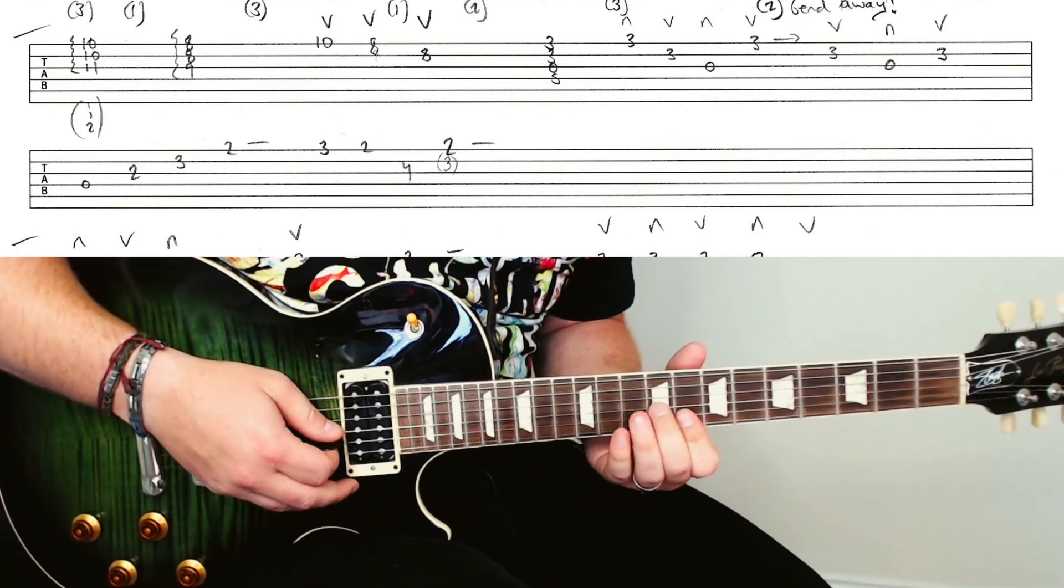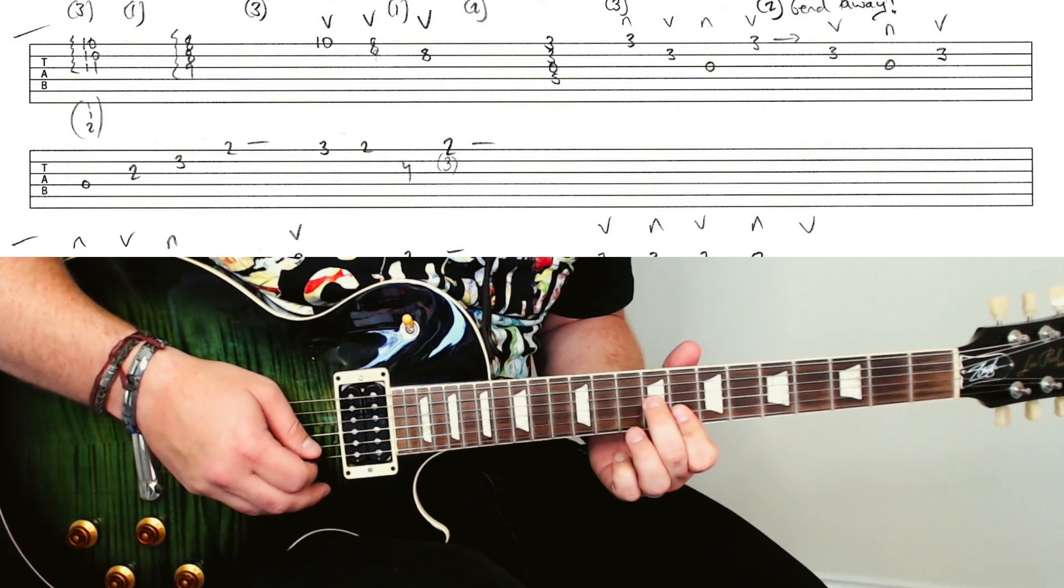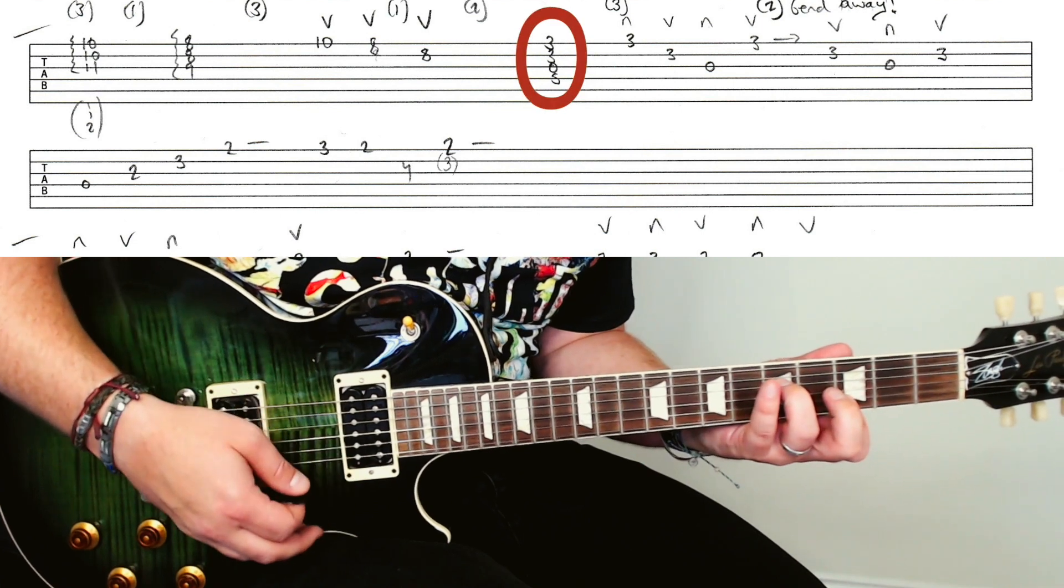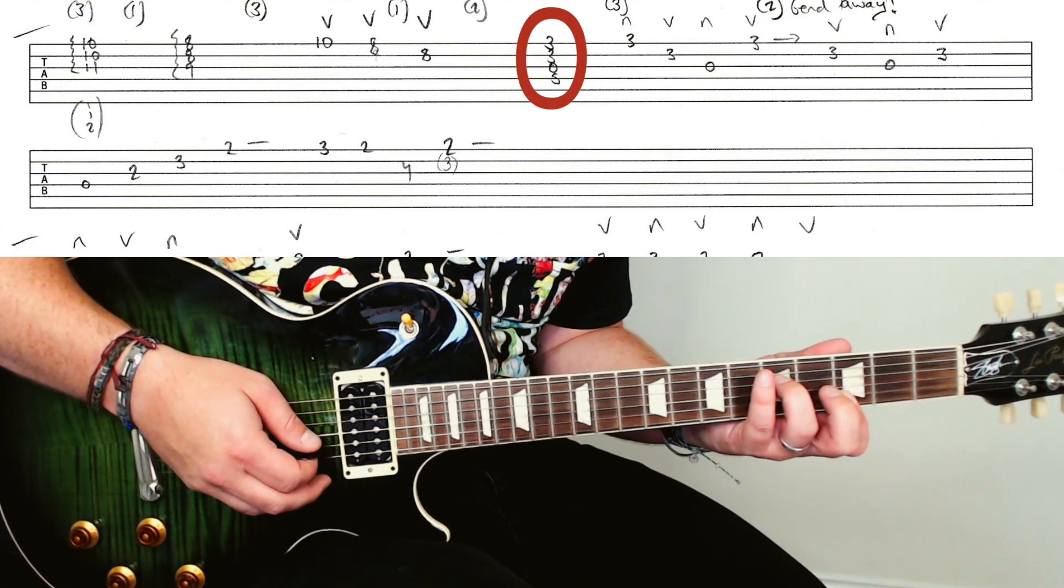So you drop into this C chord here. And then you do these up picks again. This open G. So 5th fret, open G. And then the 3rd and 3rd.